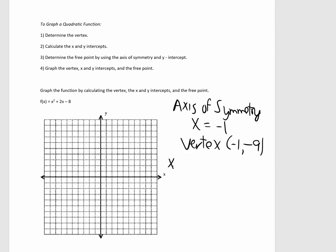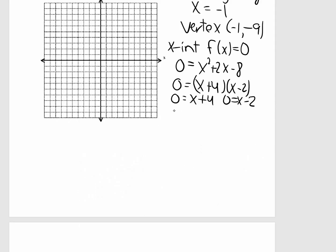So, we'll start with the x-intercept. We know f(x) is 0. This is factorable. Set each factor that contains a variable equal to 0. So, we get -4 and 2, and I can write them as ordered pairs like this.